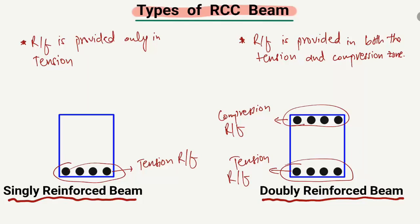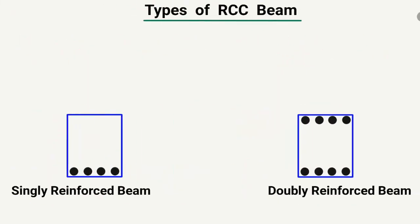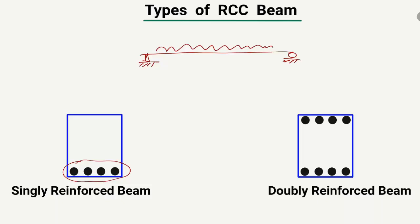Now, what is the reason that we provide a doubly reinforced beam? If there is a simply supported beam with a load acting on it, we provide reinforcement in the tension zone to take the tensile stresses. But when the load is too much increased and we cannot increase the depth or height of the beam because it is limited or restricted, we need another solution.